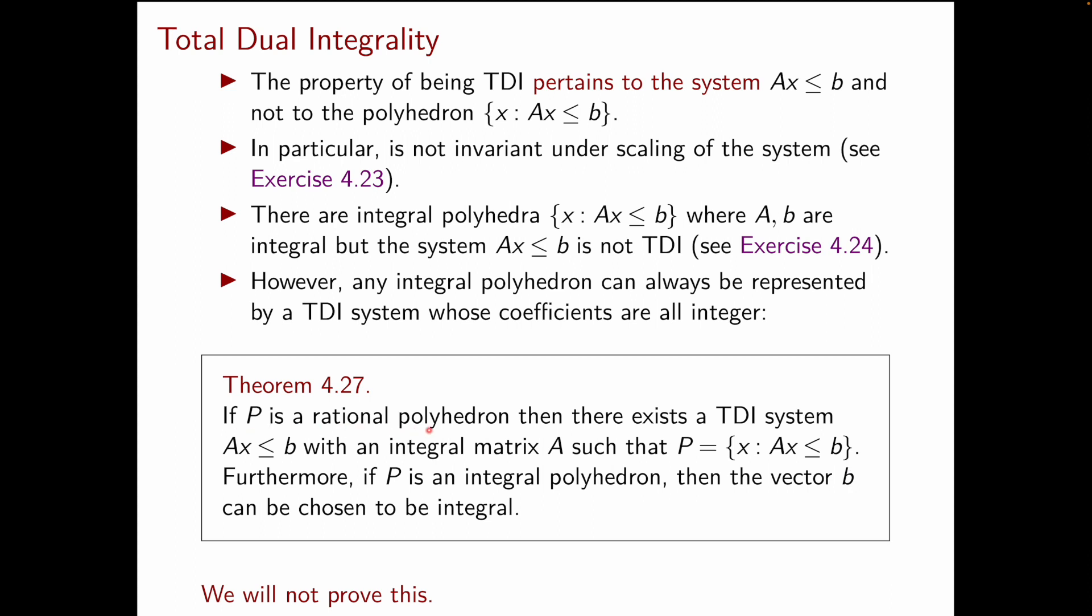It says that if P is a rational polyhedron, then there always exists a TDI system Ax ≤ b with A integral such that our polyhedron P is given by Ax ≤ b. Note that in this statement so far we didn't assume that P is integral, so this holds for any rational polyhedron. On the other hand, if P is also integral, then the vector b can be chosen to be integral so that both A and b in the TDI system are integral. We will not prove theorem 4.27 and for now this is everything I want to tell you about total dual integrality.